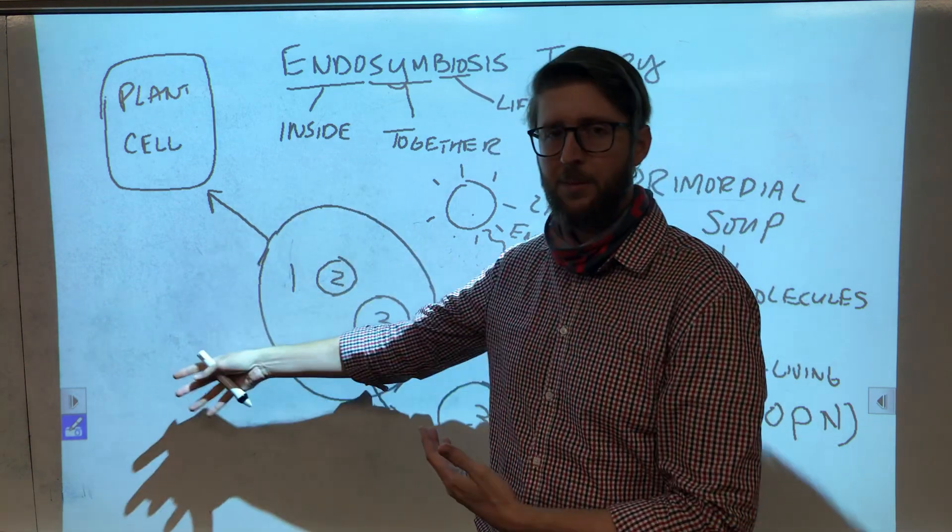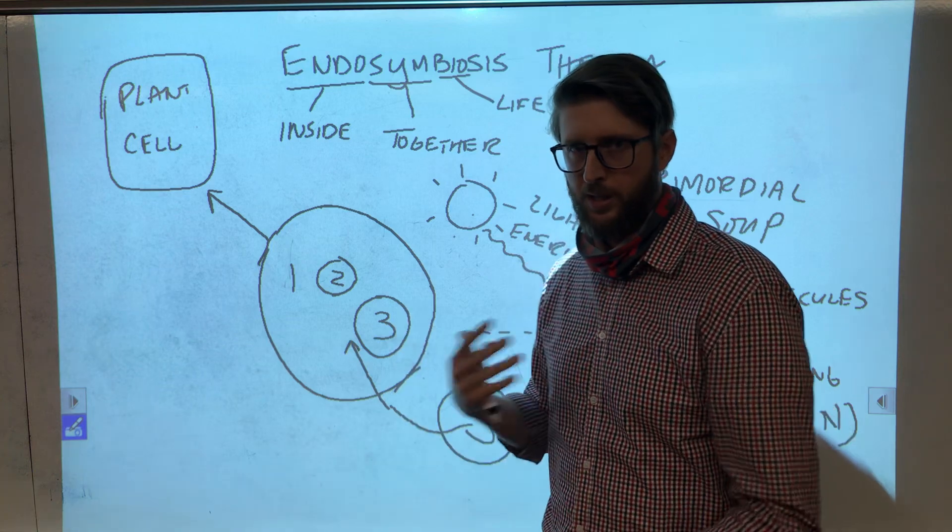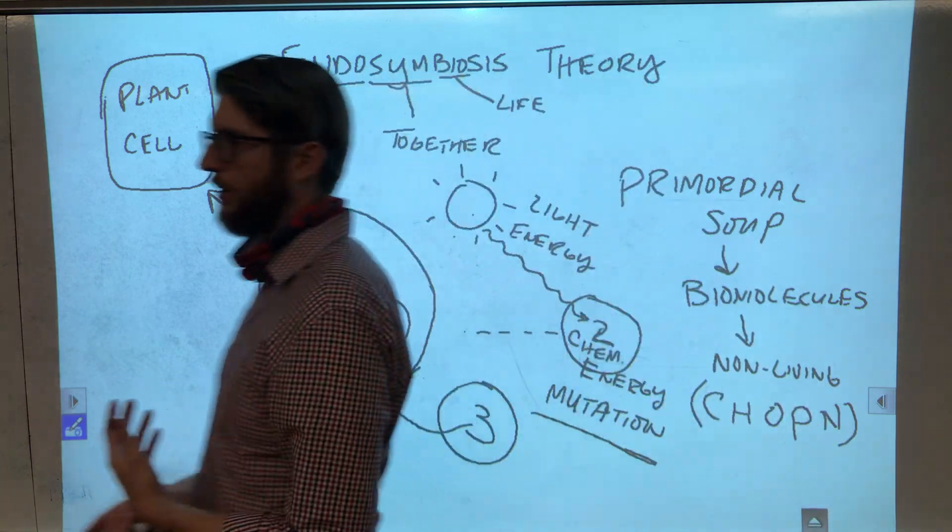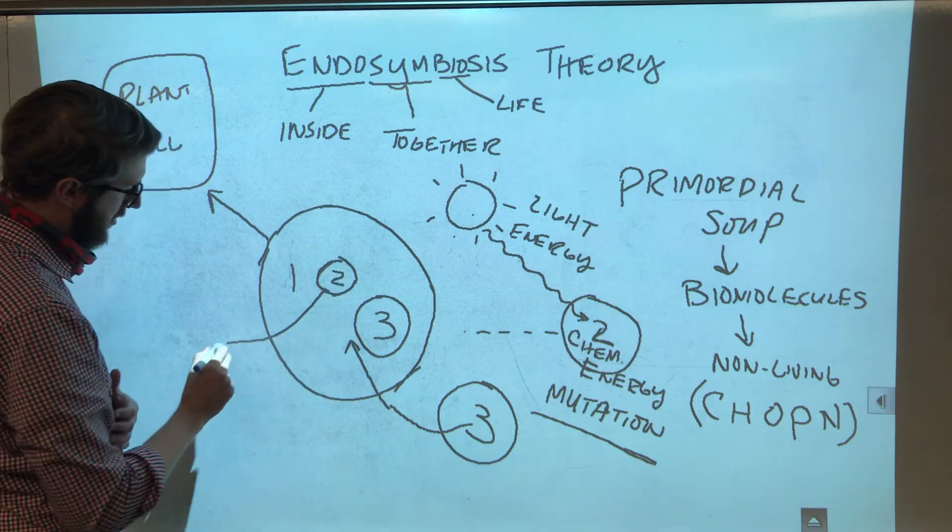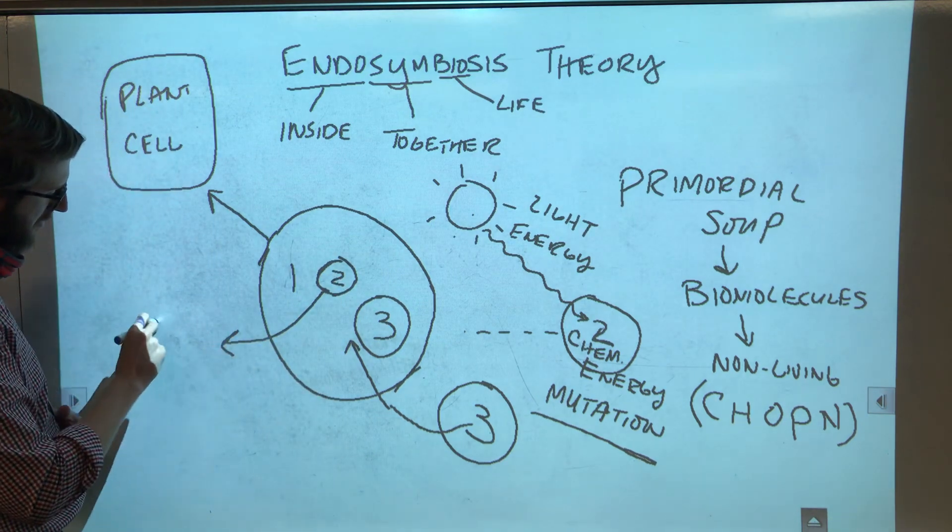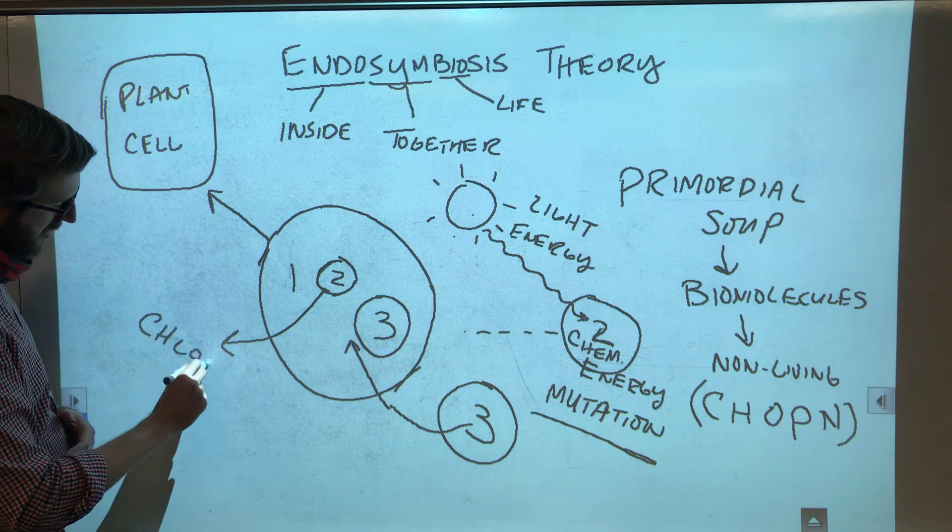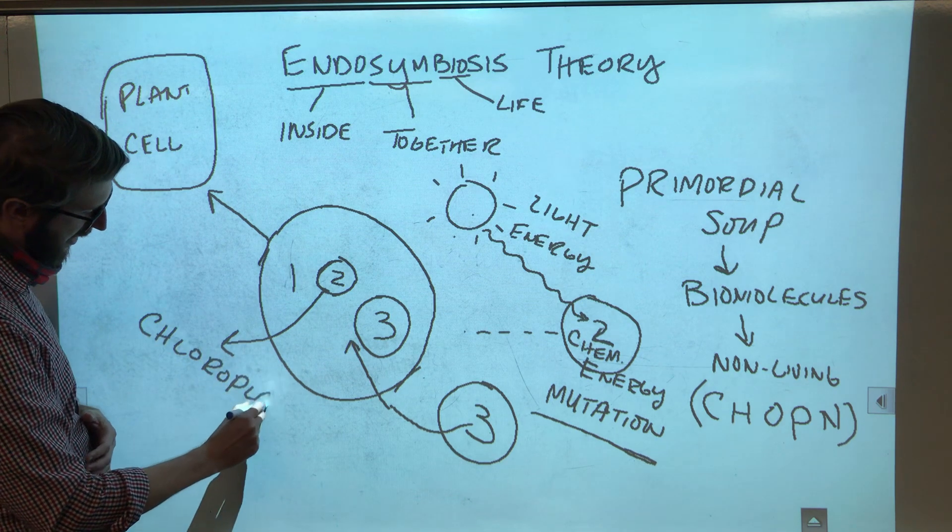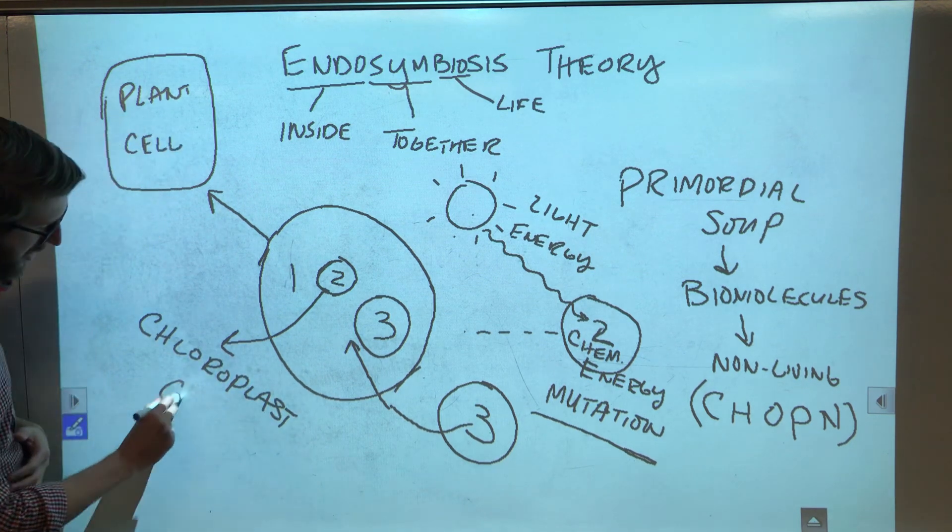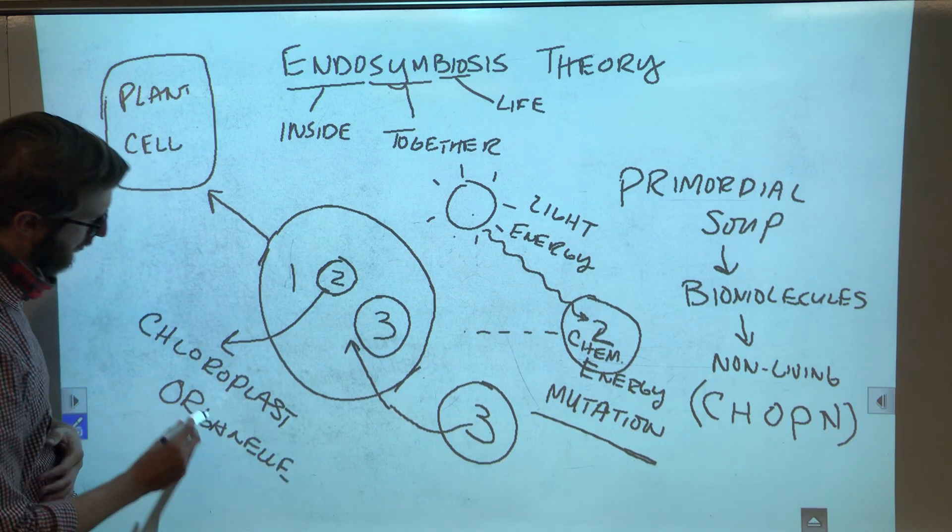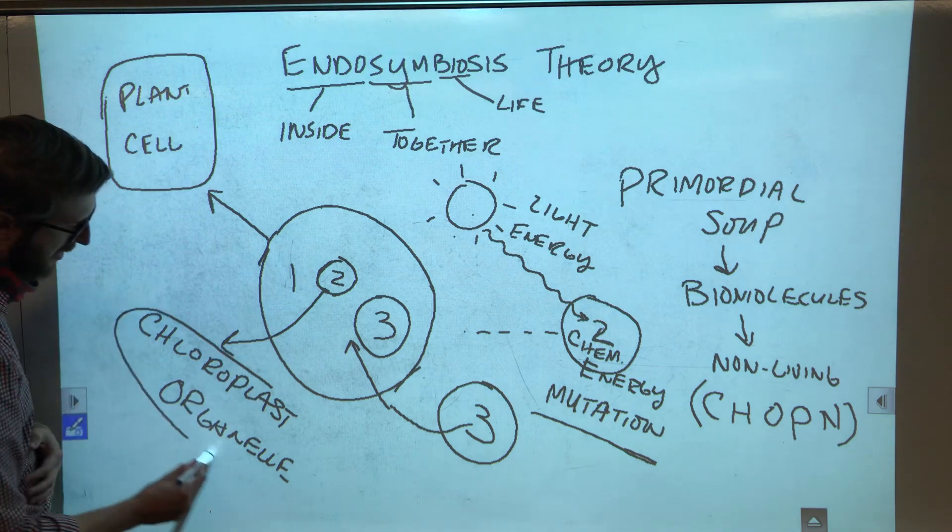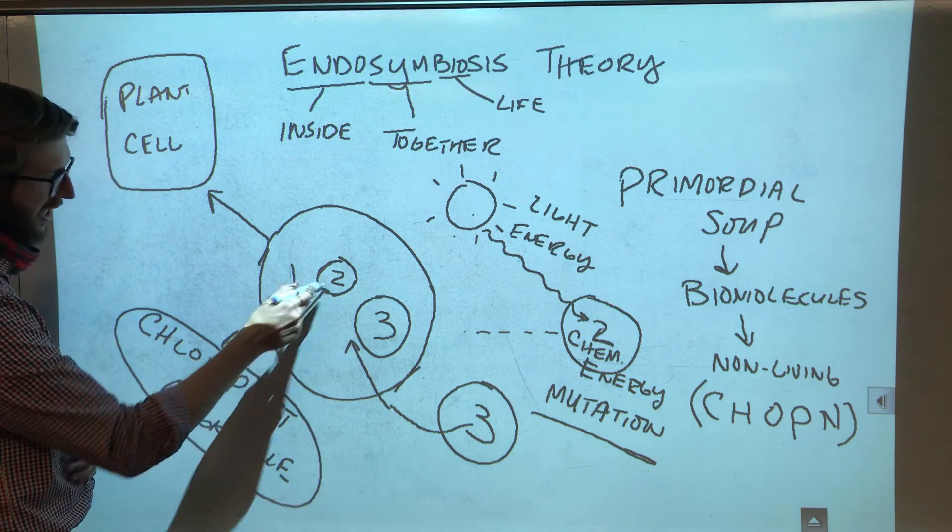And assuming that they are able to live together can actually benefit each other and become one and the same. And cells over time could become more and more complex. So what we think cell two became was the modern day chloroplast, which is an organelle that exists in plant cells.